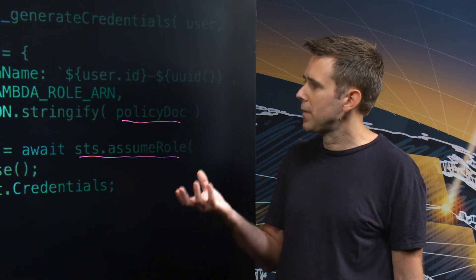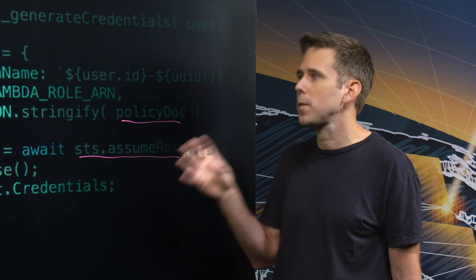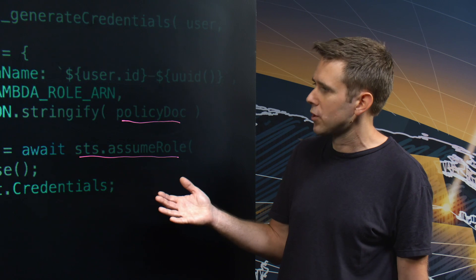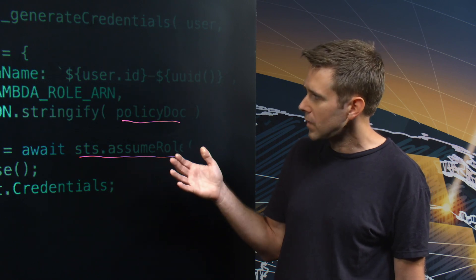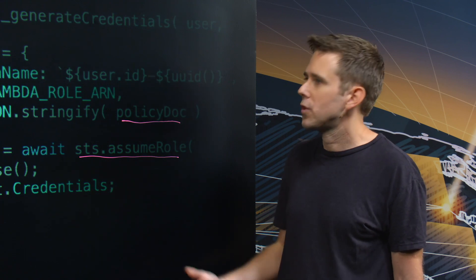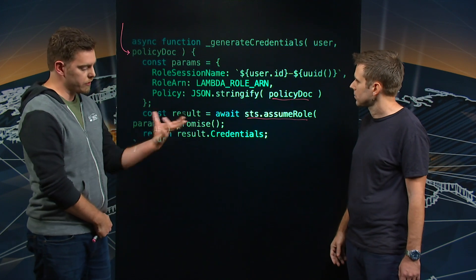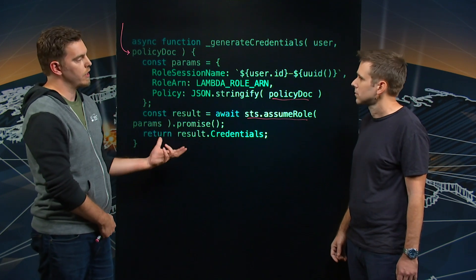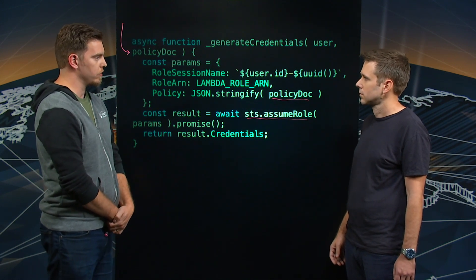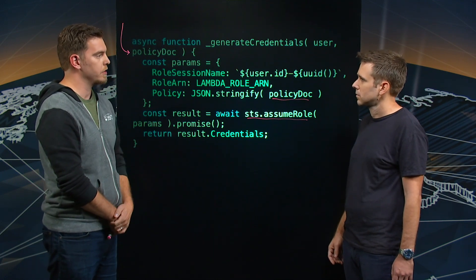So at this point, we've authenticated the user so we know who they are. We've looked up what the user is allowed to do and created an IAM policy document. And now we've turned that into the credentials that are needed so that you can go and sign the URL and hand that back to the client. The client can take that URL, connect to it over WebSockets, and then the IoT Core service handles validation of that signature, communicating in the back end back to STS.